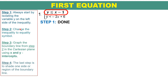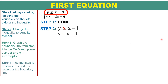Proceed with step 2: change the inequality to an equality symbol. The less than or equal to symbol will be removed and changed to an equal sign. We do this to solve for their intercepts so we can graph it later. In step 3, graph the boundary line using x and y intercepts, using the equation y equals x minus 1.